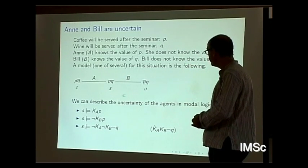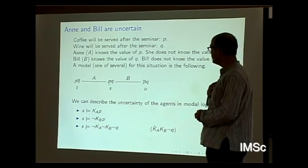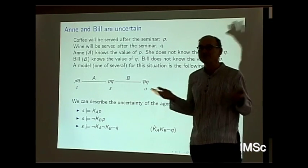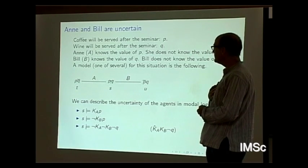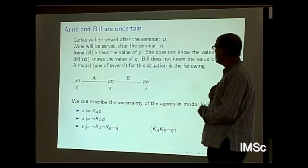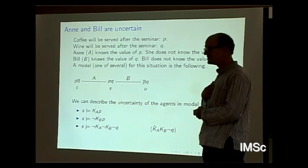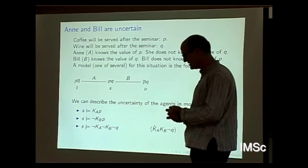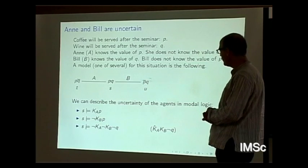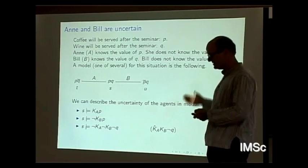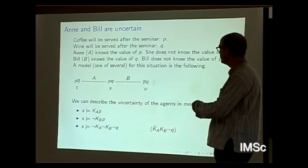Here we have three state descriptions. There will be coffee but no wine; there is coffee and wine; and here is no coffee but wine. A is uncertain between P-not-Q and PQ, so she's certain about P but uncertain about Q. B is uncertain between PQ and not-P-Q, so B knows that there will be wine. We can say this is a domain of three things, and the partition for N is that she can distinguish these two from this one, while the partition for B is that he can distinguish these from that one.